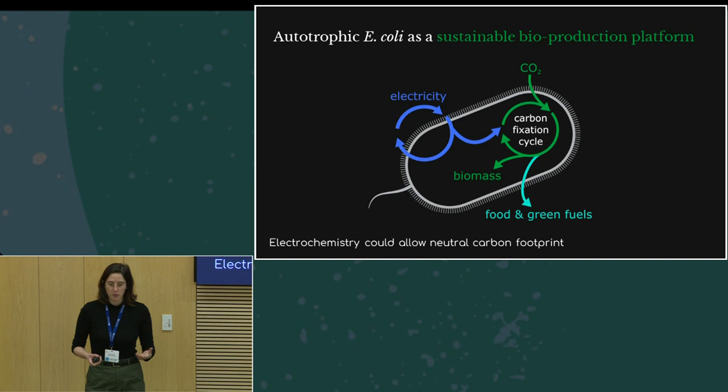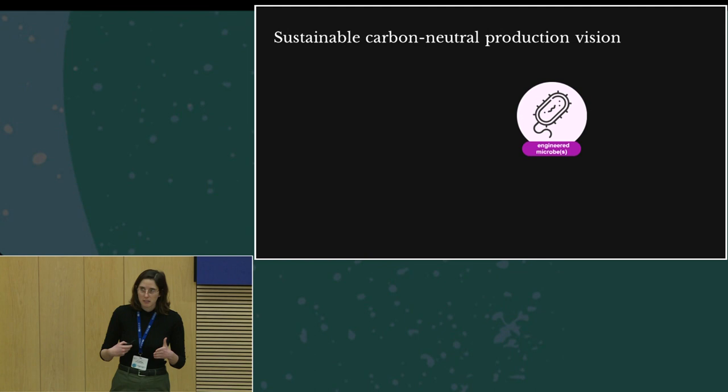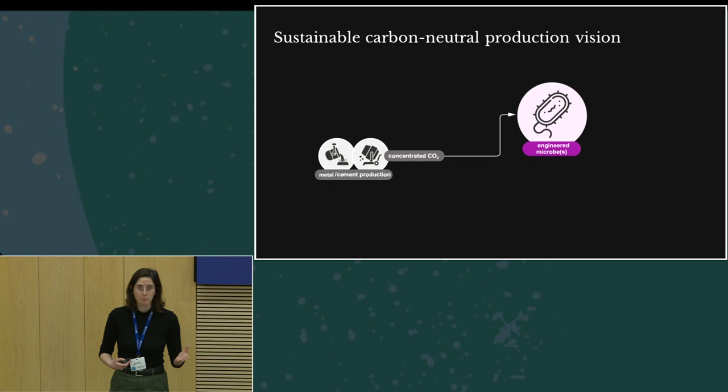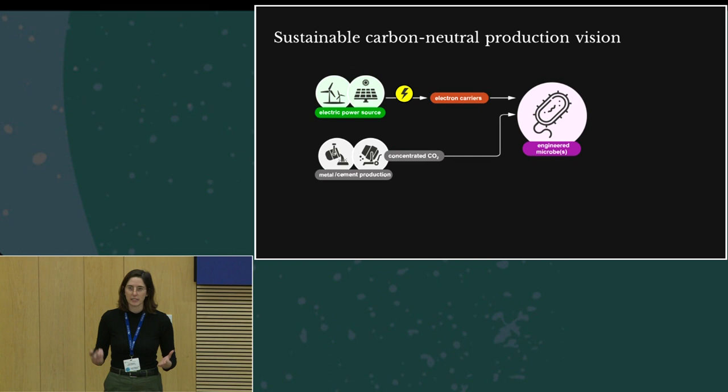E. coli is a modular system, and the vision that we have is that our engineered microbe will be fed with concentrated CO2 from air capture or different industries. The system will be fueled with renewable energy, for example photovoltaic cells, and it can produce food for us.